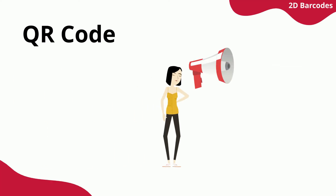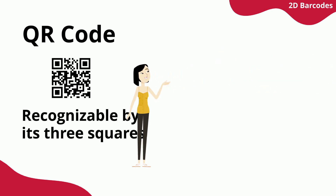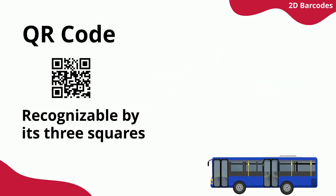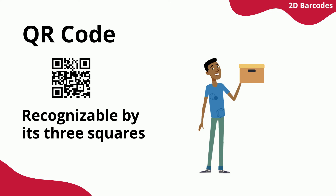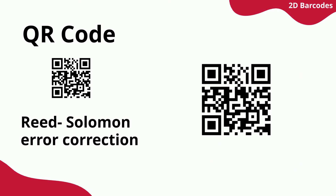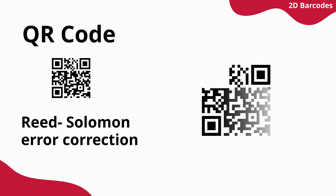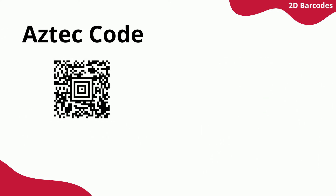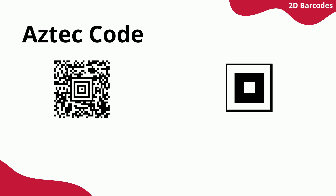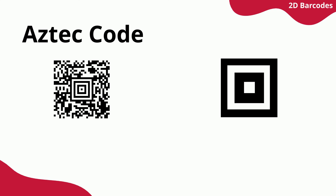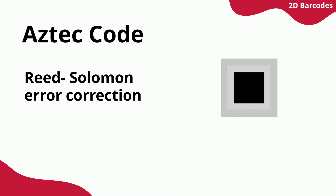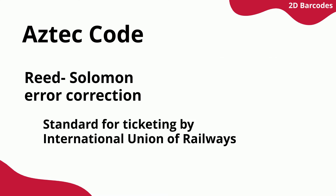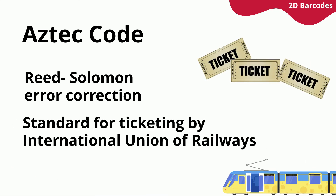The QR code is popular in advertising, public transport, airline ticketing, and parcel delivery. QR codes scan correctly even if a significant part of the matrix is missing. The Aztec code is read in a spiral pattern starting from the center, making use of the same error checking as QR codes. The transportation sector accounts for most Aztec code use cases.